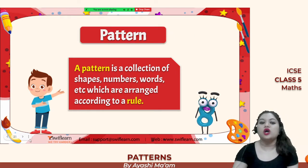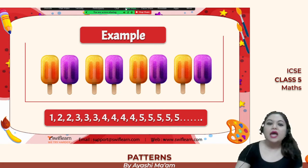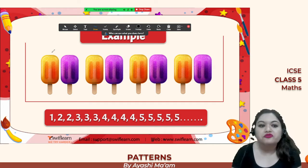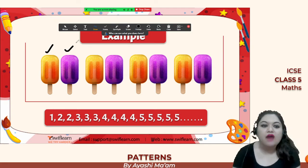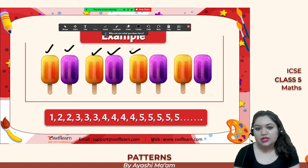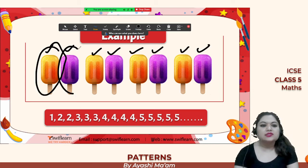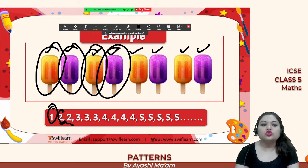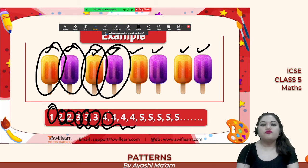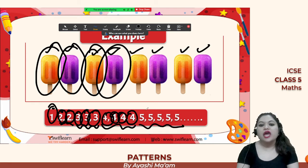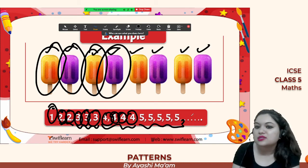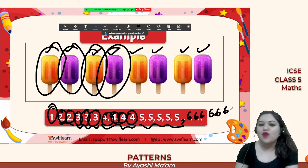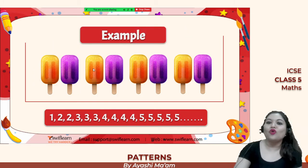A pattern is a collection of shapes, numbers, or words arranged according to a rule. Here, after every yellow ice cream we have a purple ice cream. Now look at this number pattern: one is written once, two is written twice, three is written three times, four is written four times, five is written five times. So if you write six next, you should write it six times — one, two, three, four, five, six.